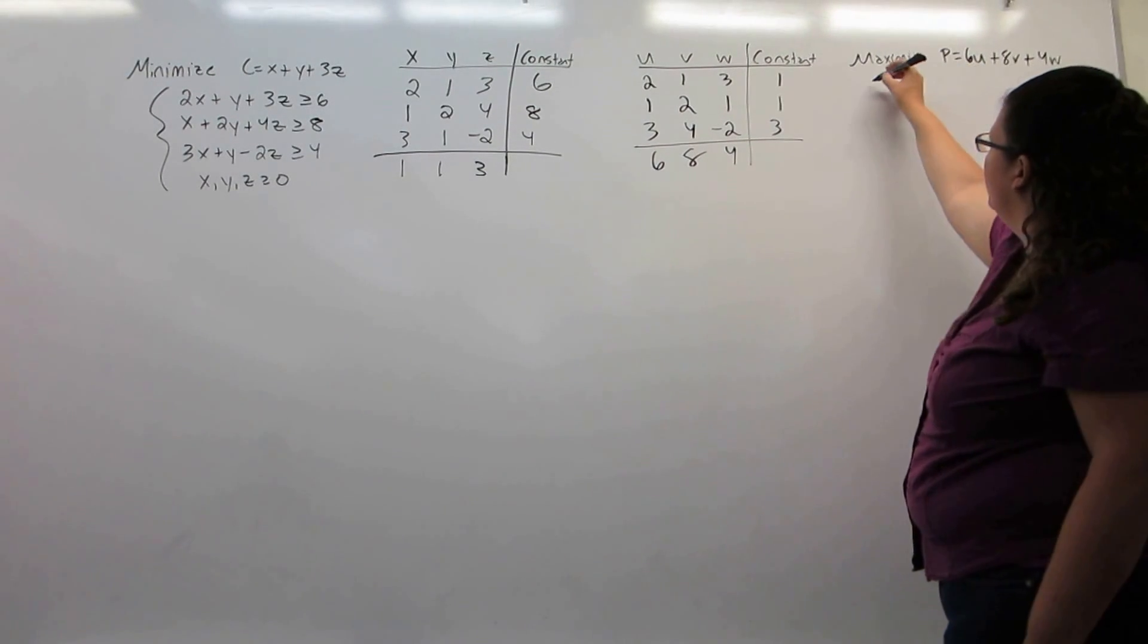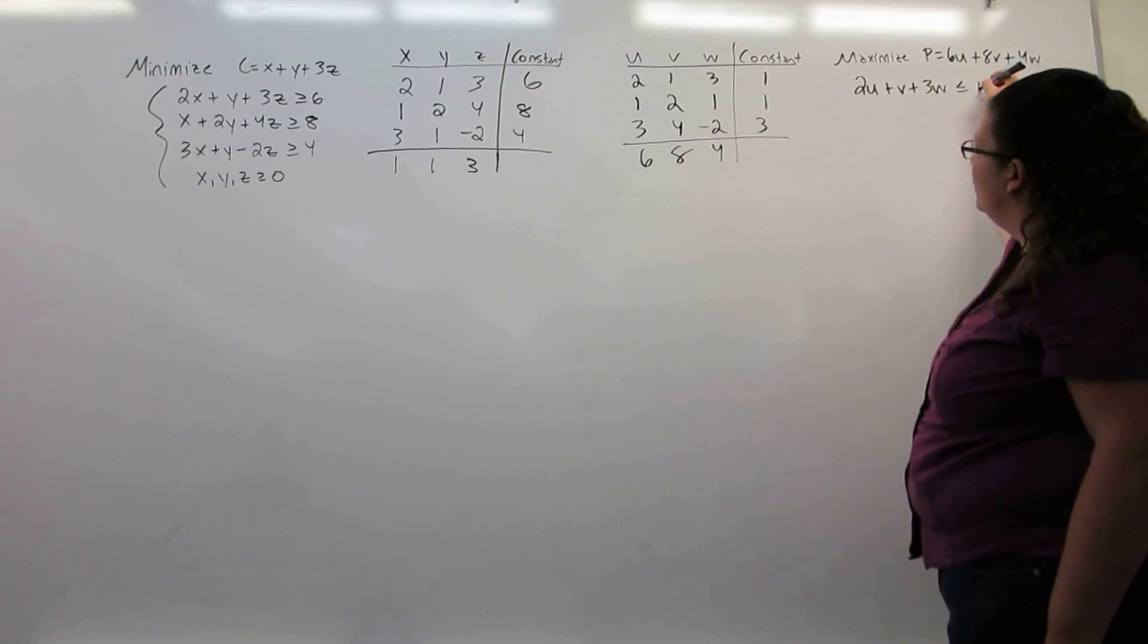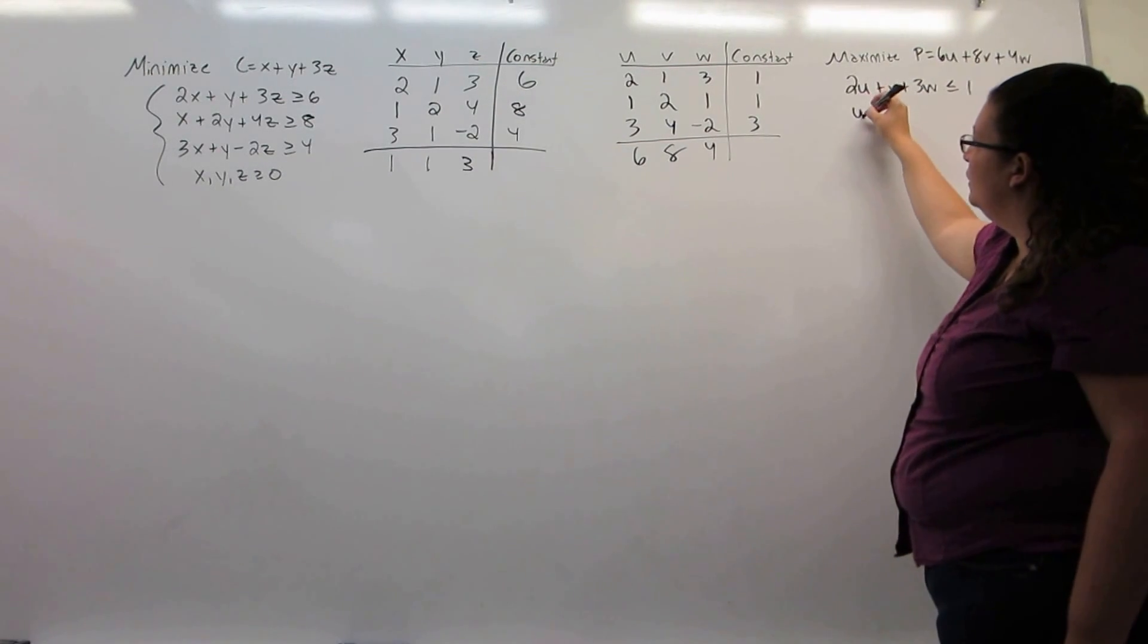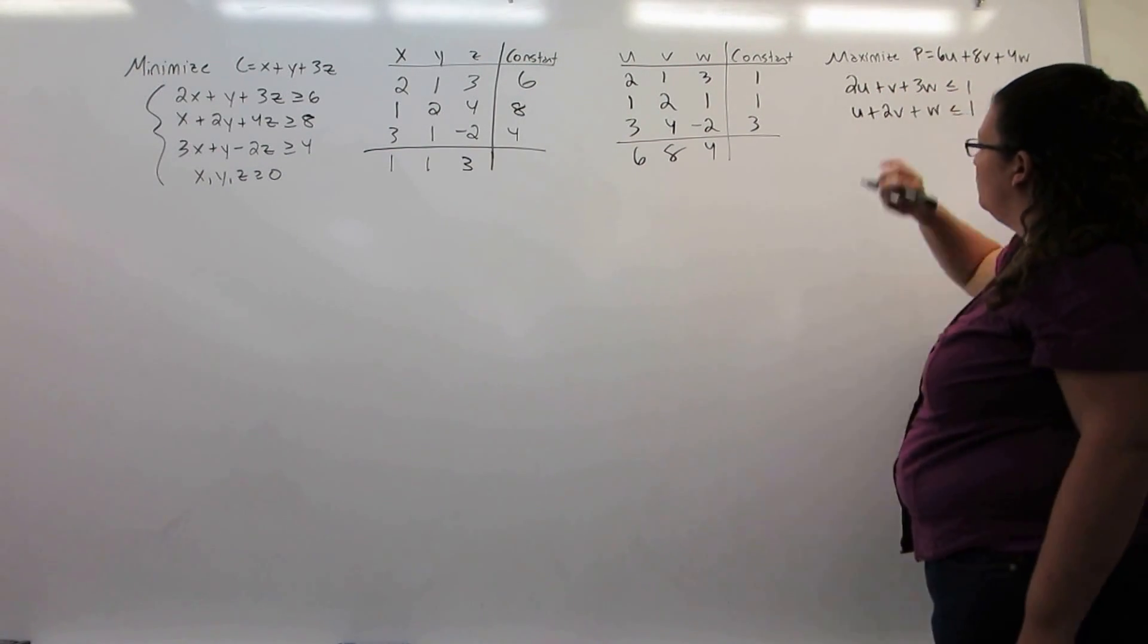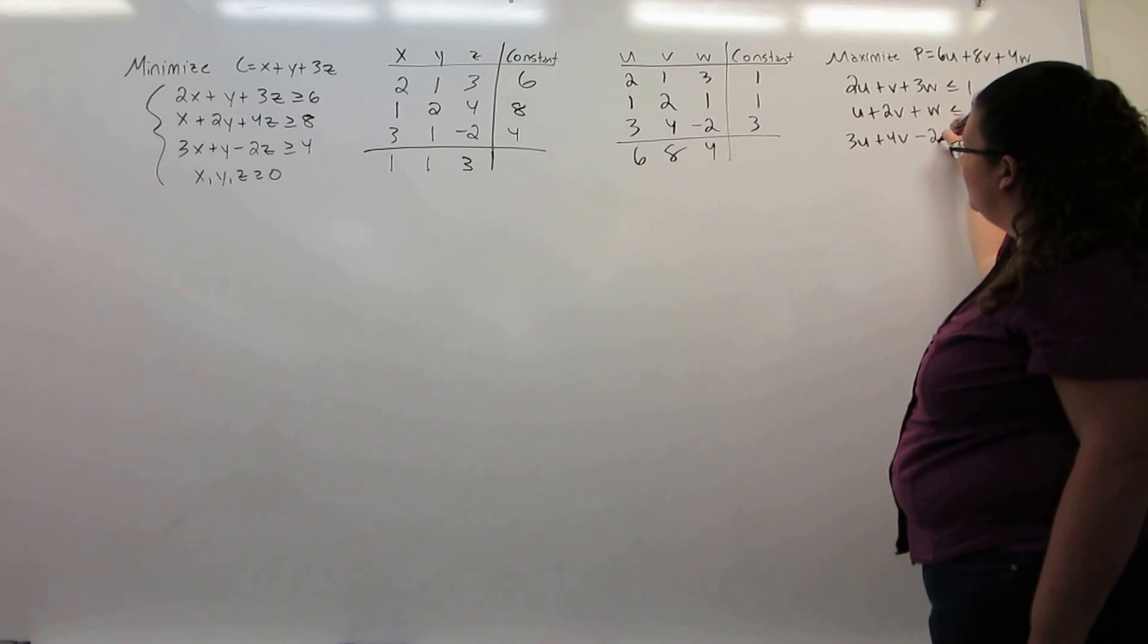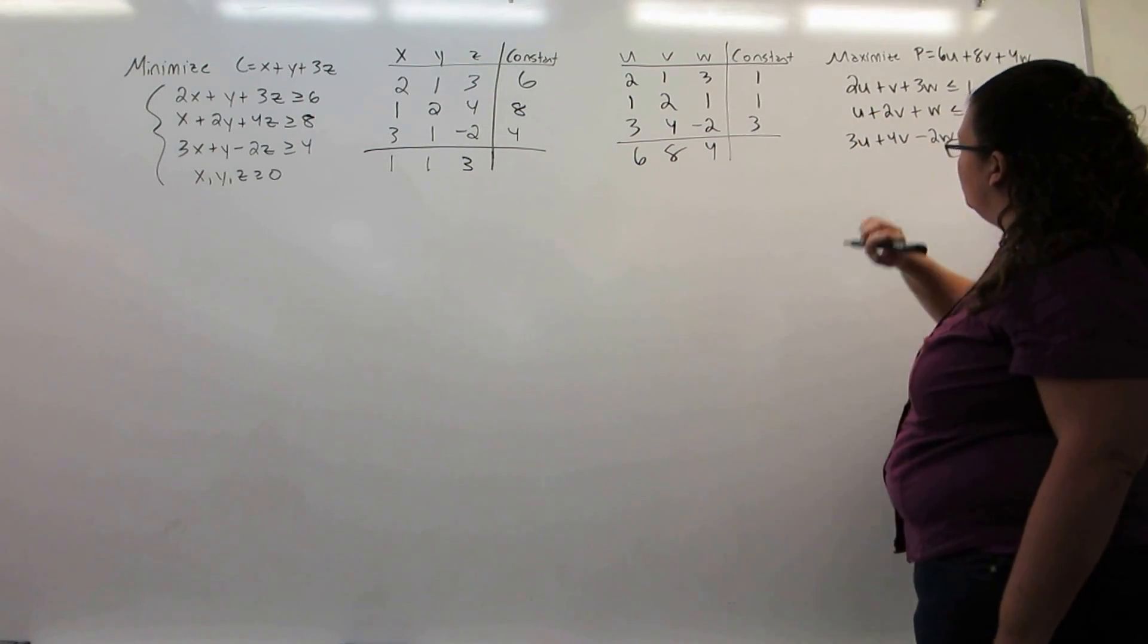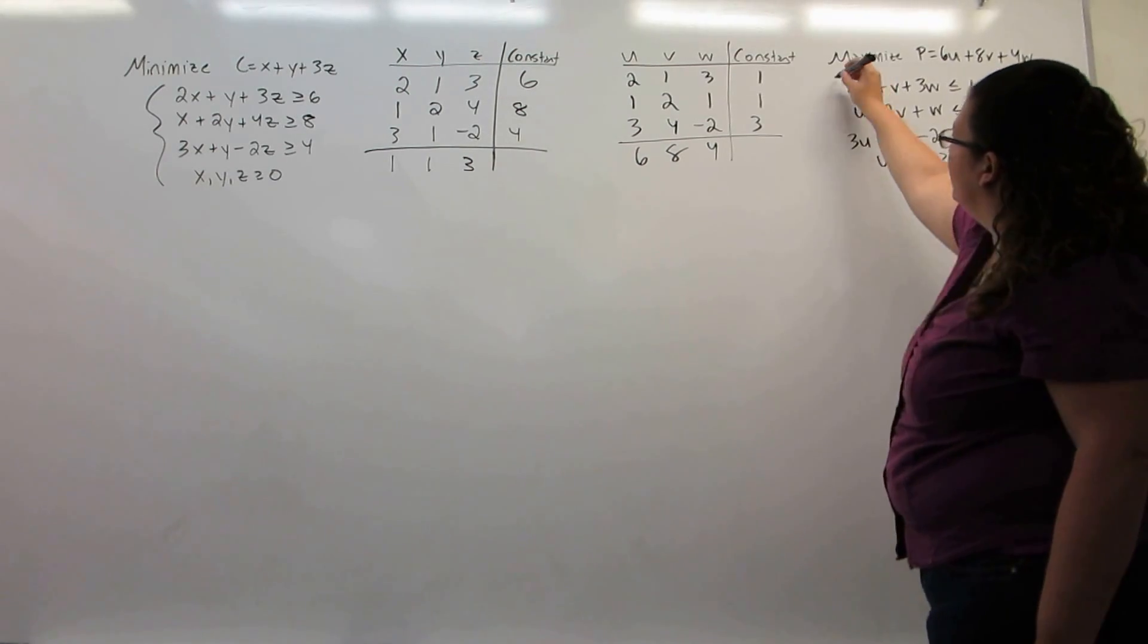Our constraints are 2u plus 3w less than or equal to 1, u plus 2v plus w less than or equal to 1, and 3u plus 4v minus 2w less than or equal to 3, with all being non-negative.